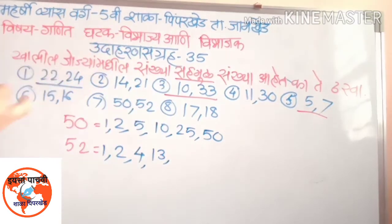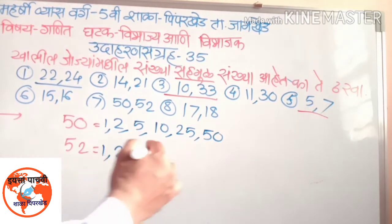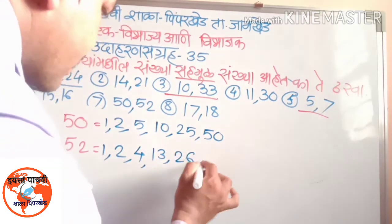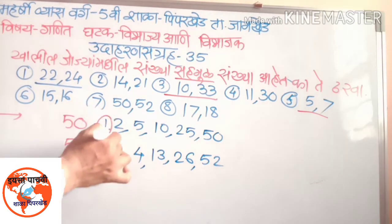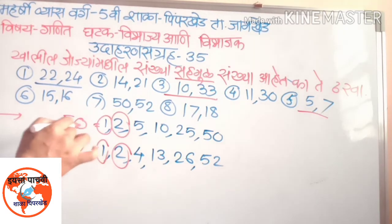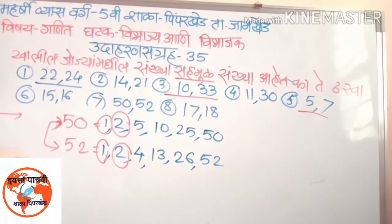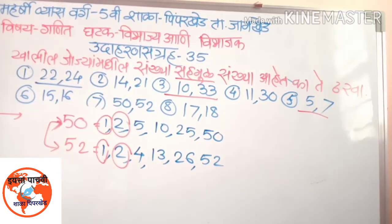Three. One. This is 22, and 22, and 22. This is 1, 1, 2, 2. मंजीय या दोनी सहमूळ संख्या नाहीत, कारण यांचा एक रीतिरक्त दुसरा सामाईक वाजक आहे.